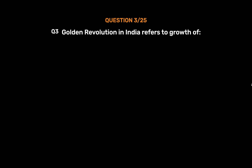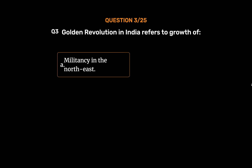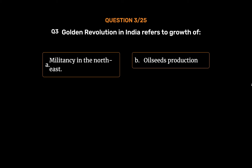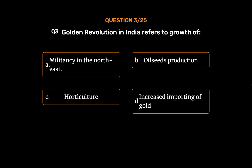Question No. 3. Golden revolution in India refers to growth of. Option A: Militancy in the Northeast. Option B: Oil seeds production. Option C: Horticulture. Option D: Increased importing of gold.